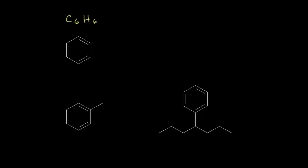Benzene was first discovered by the great Michael Faraday. At that time, chemists could figure out the molecular formulas of compounds, but they didn't know the exact dot structures. Chemists knew that benzene contained six carbons and six hydrogens, but they weren't sure exactly how those atoms were connected. So there were several different proposals for structures for benzene.